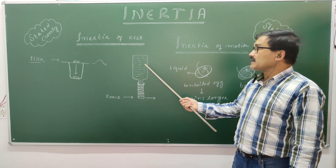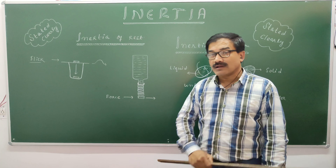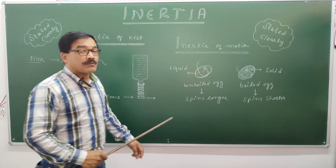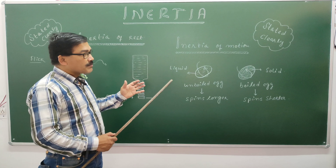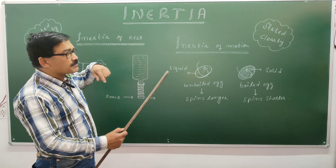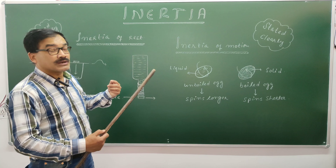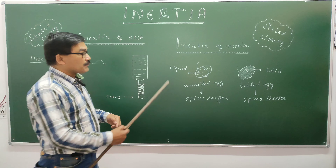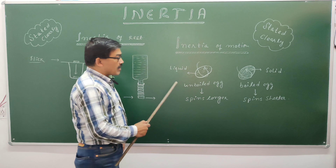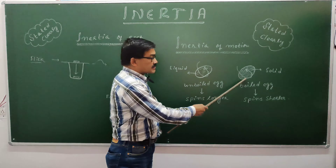It shows that the bottle is maintaining its inertia of rest. Then we will also talk about the inertia of motion. If an object is in motion, it will try to maintain its condition of motion. To demonstrate this, I have taken two eggs — one is unboiled and another is boiled.